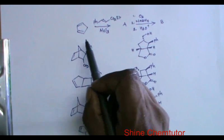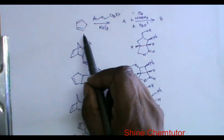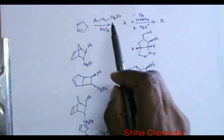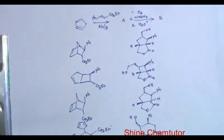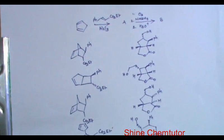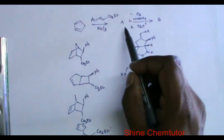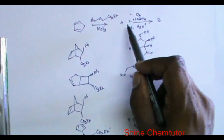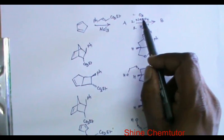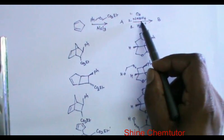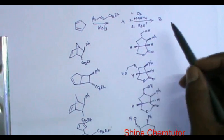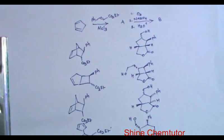The question is: when cyclopentadiene is treated with ethyl cinnamate in the presence of AlCl3, which is basically a catalyst, we get compound A. When compound A is subjected to ozonolysis, followed by treatment with sodium borohydride, then treatment with acid, we get compound B. What are the structures of A and B?